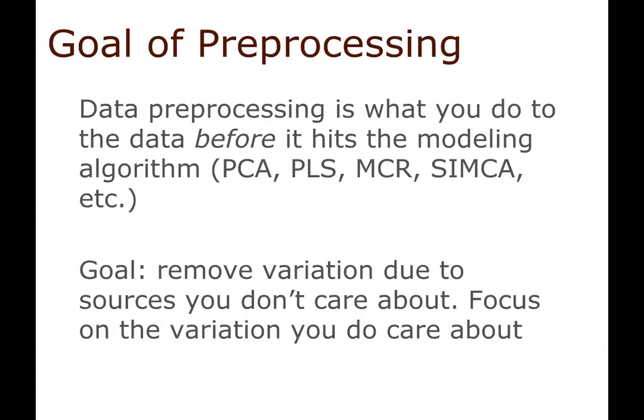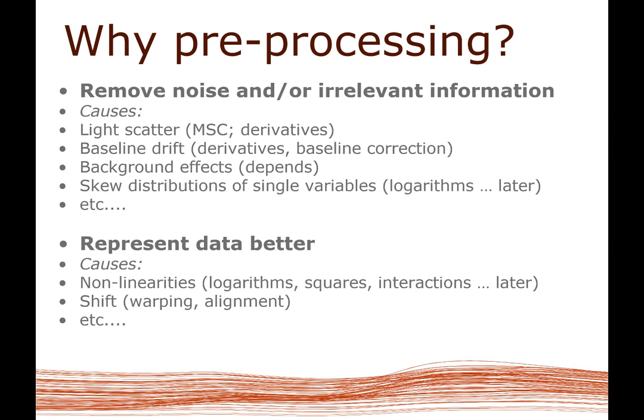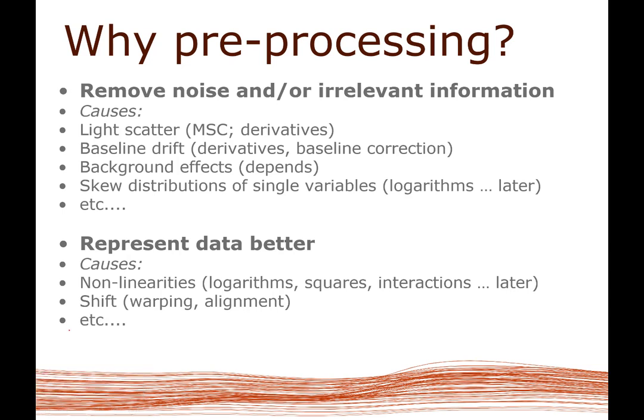The reason we want to do these things is basically to remove variation that is not interesting for us. Before we start any real modeling — could be a regression model or a PCA model — we'd like to get rid of irrelevant information. Often we're interested in removing specific artifacts, for example light scattering in near-infrared spectroscopy, in order to focus on the more chemical part of the variation.